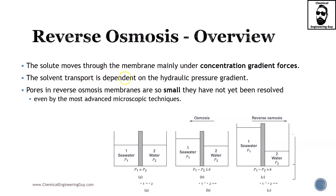The solids move through the membrane mainly under concentration gradient forces, while solvent transport depends on the hydraulic pressure gradient — so even though it is based on concentration, it is actually driven by the pressure you apply. Pores in reverse osmosis membranes are so small they have not yet been resolved even by the most advanced microscopic techniques, but technology will eventually get there.